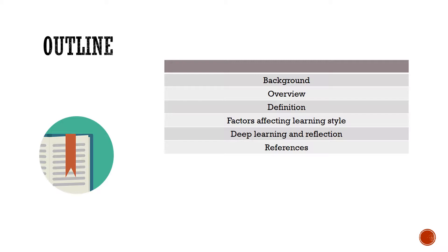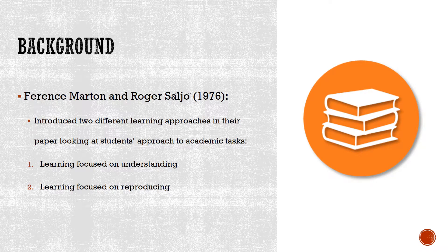deep learning and reflection, and finally references. In 1976, these two scientists Ference Marton and Roger Säljö introduced two different learning approaches in their paper looking at students' approach to academic tasks. The first one they found was learning focused on understanding, and the second was learning focused on reproducing.